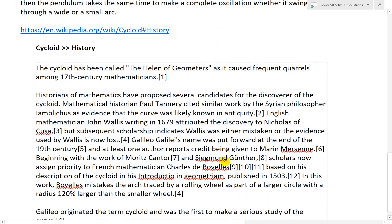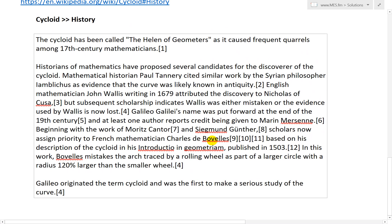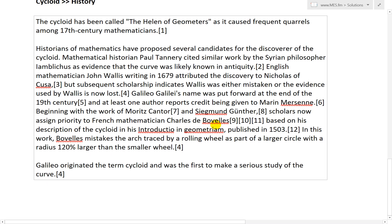And also looking further into this from Wikipedia, if you go to the history section of the cycloid, I just want to show some interesting thing I read. So the cycloid has been called the Helen of geometers as it caused frequent quarrels among 17th century mathematicians. This is the reference to Helen of Troy. Historians of mathematicians have proposed several candidates for the discoverer of the cycloid. Mathematical historian Paul Tannery cited similar work by the Syrian philosopher Iamblichus as evidence that the curve was likely known in antiquity.